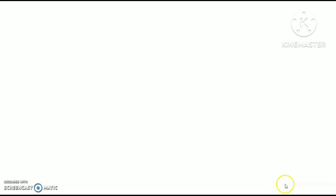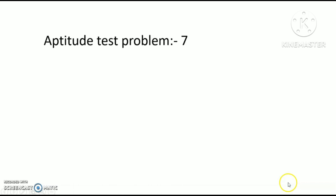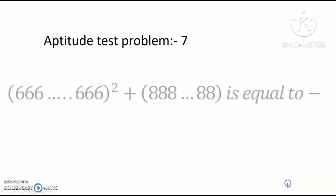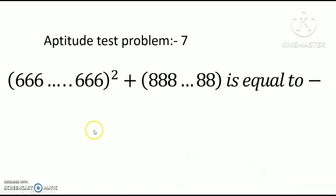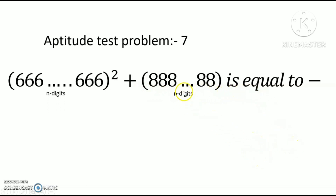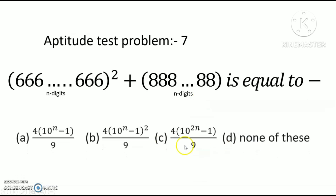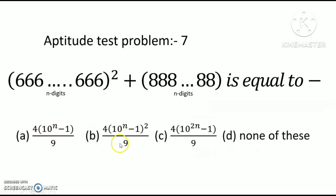Hello dear friends, welcome to my channel. Today's discussion is aptitude test problem 7: 666...6 whole square plus 888...8, where both are n-digit numbers. We need to find which option is correct.